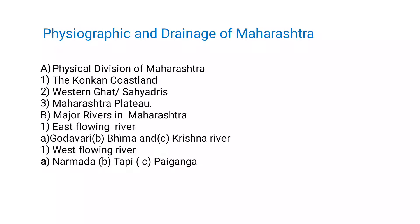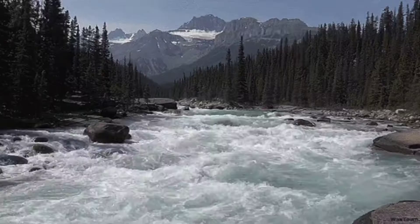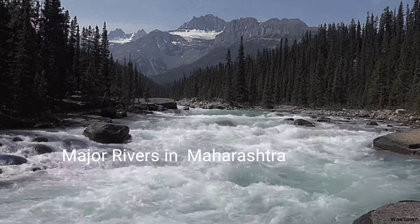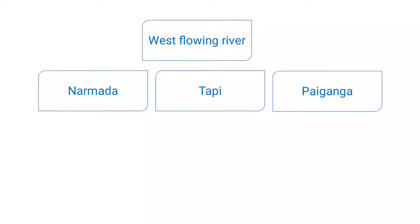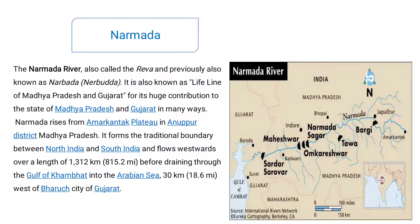Today we have to discuss the West Flowing Rivers. First is Narmada, second is Tapi, and third is Pai Ganga. These are the three West Flowing Rivers. One by one we will cover the major rivers in Maharashtra — West Flowing Rivers: Narmada, Tapi, and Pai Ganga. These are the three most important West Flowing Rivers in the Maharashtra region.